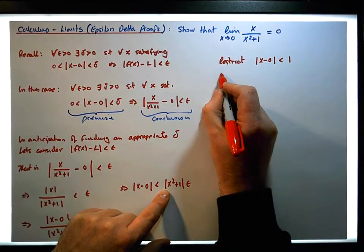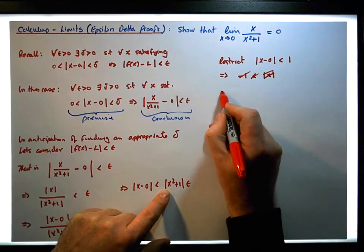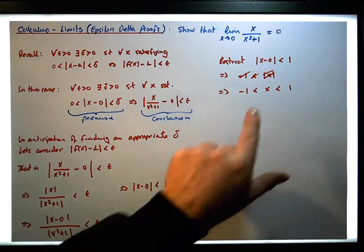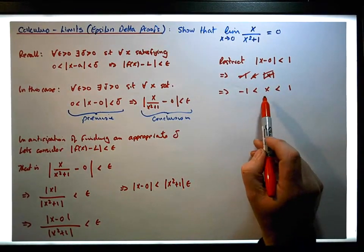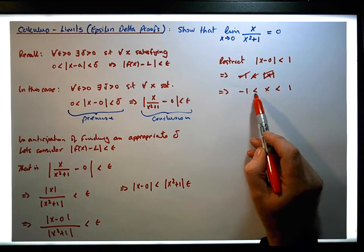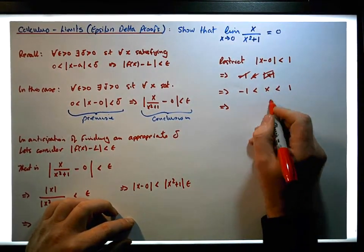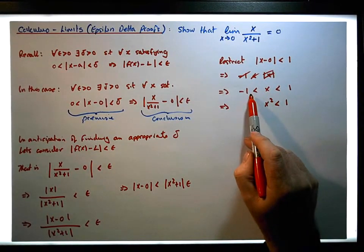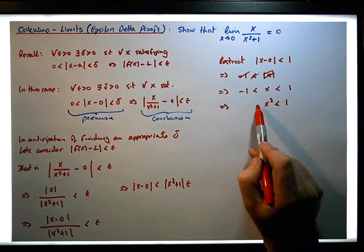This restriction implies that minus 1 must be less than x, which must be less than 1. Now from this, we'd like to figure out the situation with x squared plus 1. If x is strictly between minus 1 and 0, then squaring x gives us x squared less than 1 from an upper bound perspective. Similarly, squaring a negative number bigger than minus 1 but less than 0 gives a positive number less than 1.